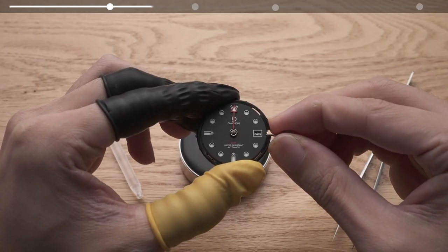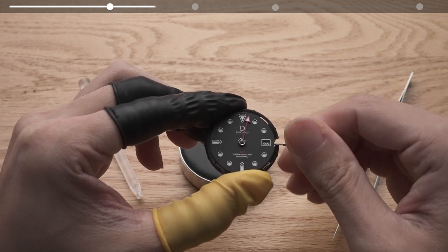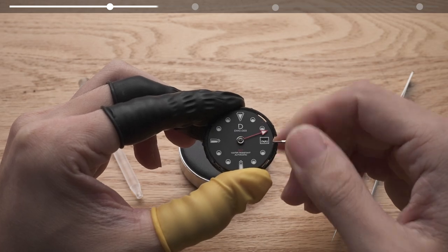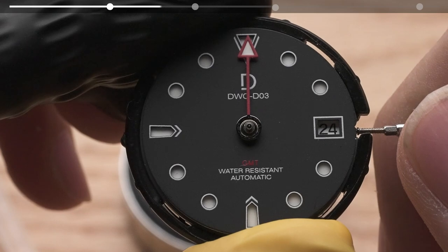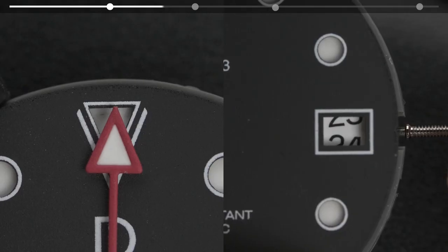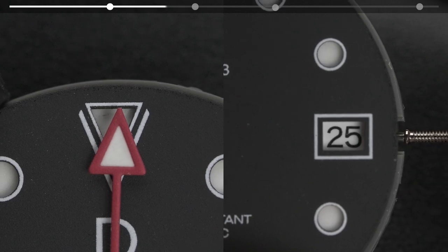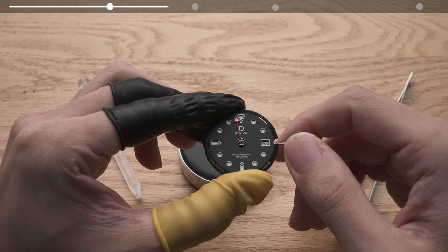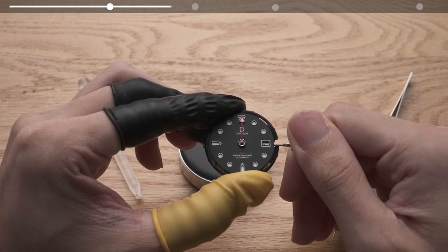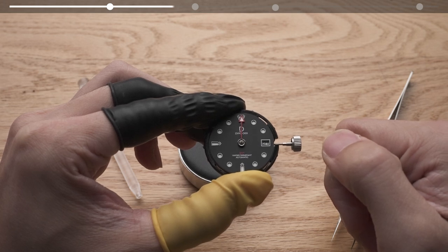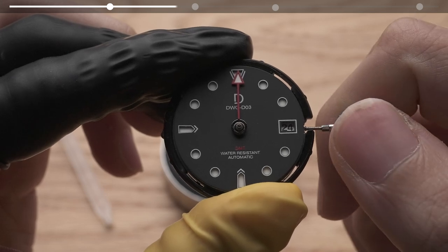After setting the GMT hand, pull the crown all the way out to the time setting position and advance the time a full circle. The date should transition when the GMT hand is near 12 o'clock. A slightly off alignment at 12 o'clock is acceptable as the hand tends to jump a little bit when the date transitions, and also because the date transition mechanism takes a relatively long time to complete its action. This is normal for an entry movement like the NH34, so we are simply aiming at date transitioning when the GMT hand is in the vicinity of midnight.